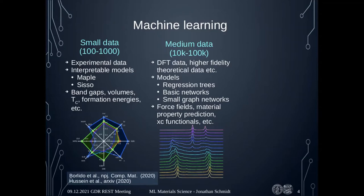Mostly DFT data, sometimes we have some higher-fidelity theoretical data like GW — maybe a few thousand GW band gaps. Here we can use all kinds of models: regression trees, random forests, basic fully-connected or convolutional networks as Jack talked about, or maybe some small graph networks, which I will explain later.